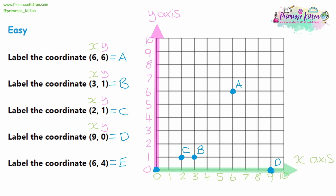For the final easy question, we have (6, 4). X-axis is 6, y-axis is 4. Starting at (0, 0), going across 6 places to the right, then up 4 places upwards — and there is our coordinate, labeled E. Always check your answer: I can see the green 6 underneath and the pink 4 to the left, so I'm definitely on (6, 4). The most common mistake students make here is getting x and y the wrong way around. Always remember that x is first — along the corridor and up the stairs. X-axis first, then y-axis second.